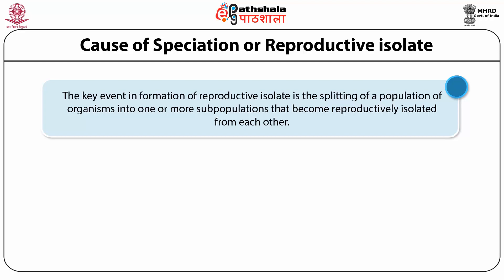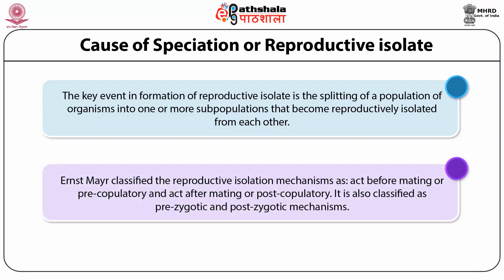Groups of organisms can be reproductively isolated from each other by different mechanisms even if they inhabit the same territory. It has been demonstrated experimentally that they can evolve in species whose geographical distribution overlap — such speciation is known as sympatric speciation. Whereas speciation whose geographical distribution does not overlap is called allopatric speciation. Ernest Mayr classified reproductive isolation mechanisms into two categories: one acting before mating or pre-copulatory, and another acting after mating or post-copulatory, also classified as pre-zygotic and post-zygotic mechanisms.